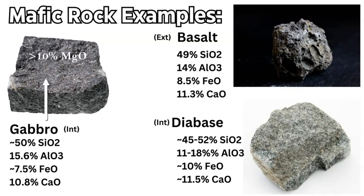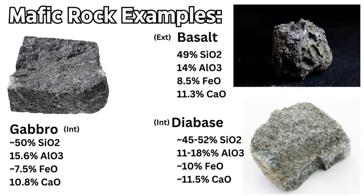Gabbro is a very common intrusive mafic rock — the mafic counterpart to granite, which is felsic. Gabbro has about 50% silica oxide, about 15.5% aluminum oxide, about 7.5% iron, and about 10.8% calcium oxide — very similar to basalt. Then there is diabase, another common intrusive mafic rock similar to gabbro, but with a little less silica, a little less aluminum, a bit more iron, and around the same amount of calcium oxide. These three common mafic rocks all demonstrate higher levels of iron, aluminum, and calcium oxide in their composition, but with less silica.